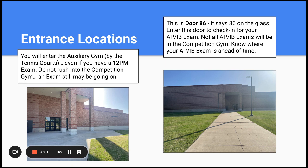Your entrance location: when you arrive at 7:15 on May 5th for your AP Human Geography exam, you will enter the auxiliary gym doors — door 86. There will also be a poster that says "AP exam entrance here."